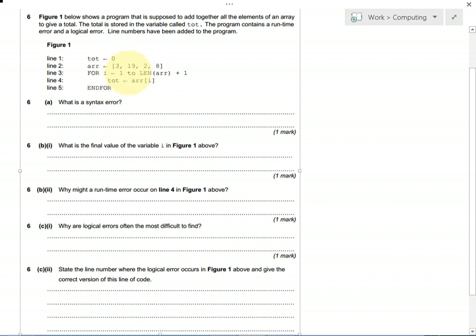If i is 2, then tot will be 19. If i is 3, then tot will be 2. If i is 4, then tot will be 8.